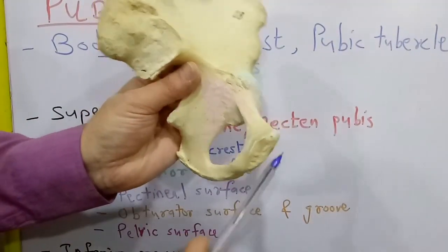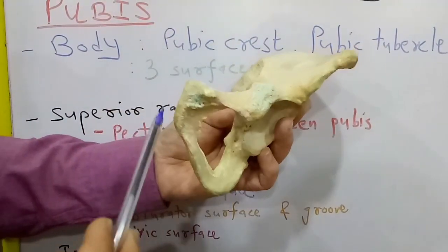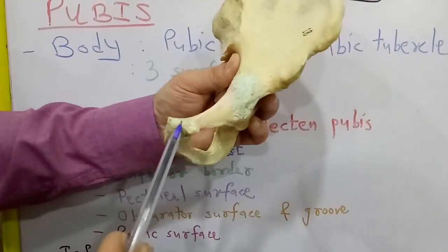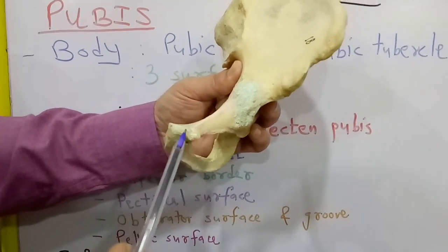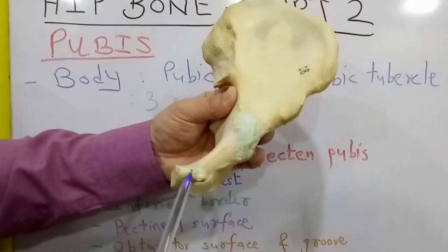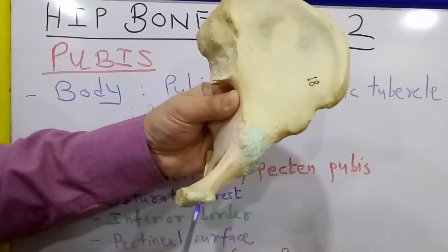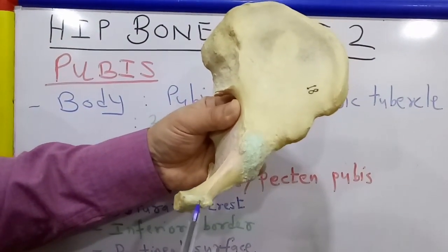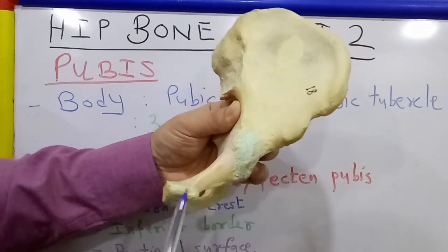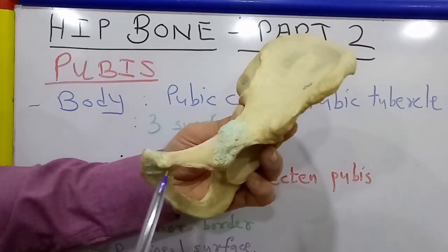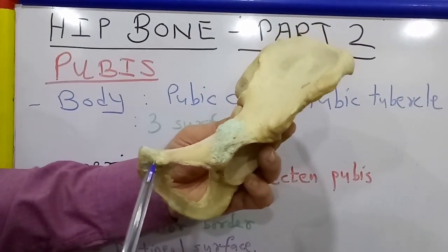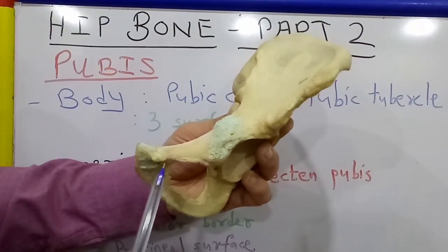Coming to the features on the body: the superior border of the body is known as the pubic crest. This is the pubic crest, which ends laterally in a tubercle known as the pubic tubercle.